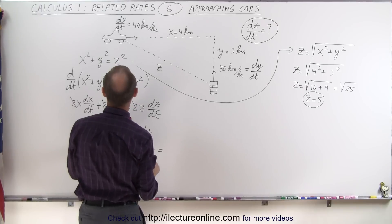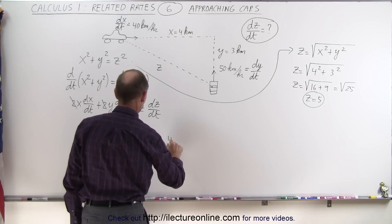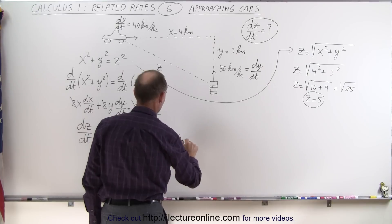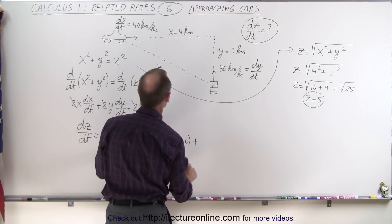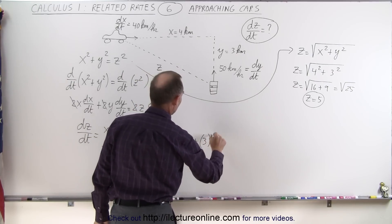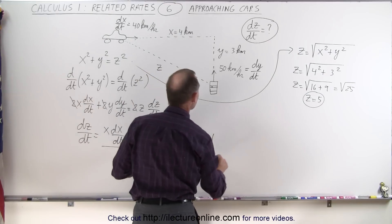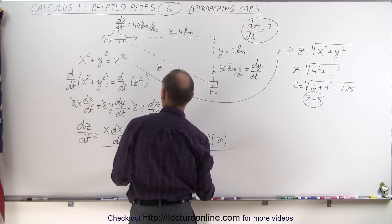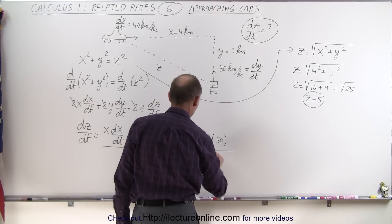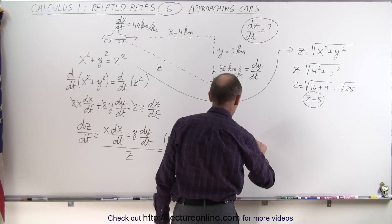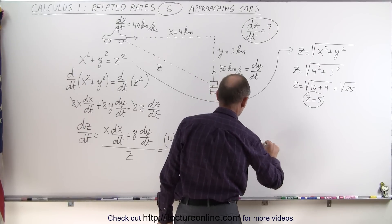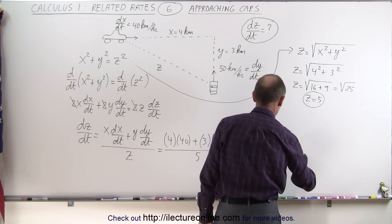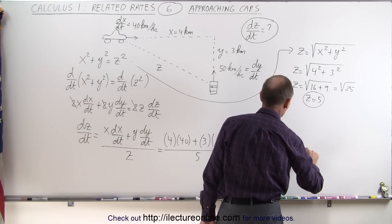Now we're ready to calculate. dz/dt equals x, which is 4, times dx/dt, which is 40, plus y, which is 3, times dy/dt, which is 50, all divided by z, which is 5. So this is equal to 160 plus 150 divided by 5, which is 310 divided by 5, which is 62.